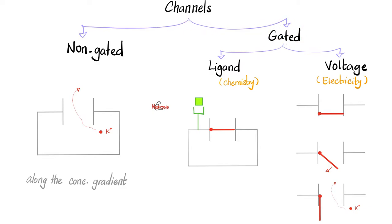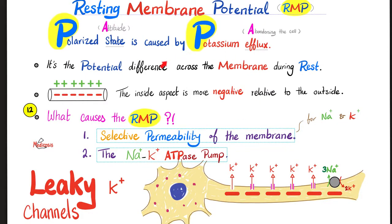Other channels are gated. They will not open until a ligand comes and binds, or an electrical change happens. Ligand-gated versus voltage-gated channels — channels that open by chemistry versus channels that open by electricity. Recall the resting membrane potential. Who is responsible for the potassium efflux? Leaky potassium channels during rest — they are always open, non-gated channels, important when the membrane is resting, and responsible for your resting membrane potential.